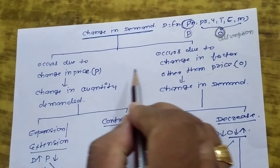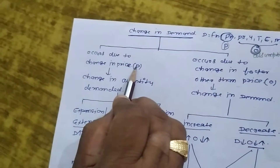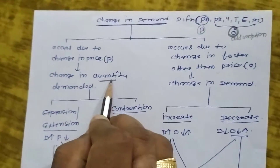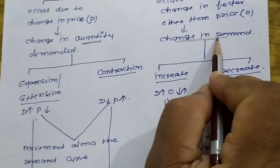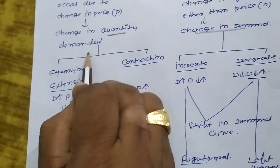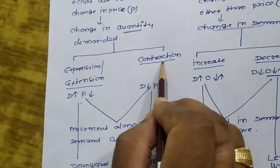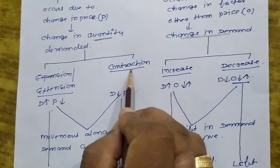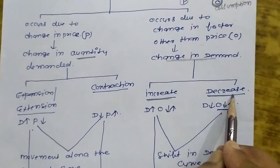When change occurs due to change in price, there is a change in quantity demanded. And when it occurs due to change in factors other than price, there will be change in demand. In change in quantity demanded, there may be expansion or contraction in demand. And in change in demand, there is increase and decrease in demand.